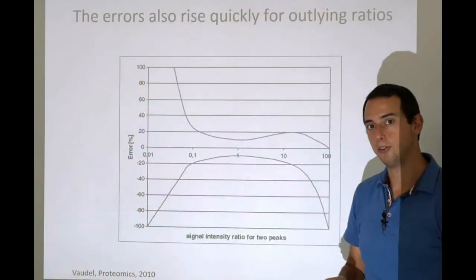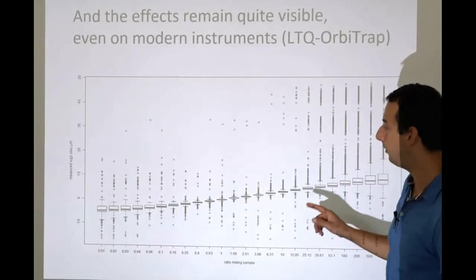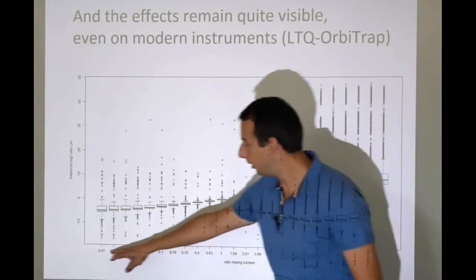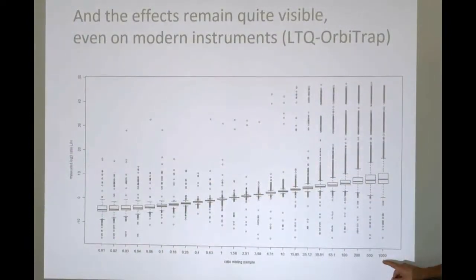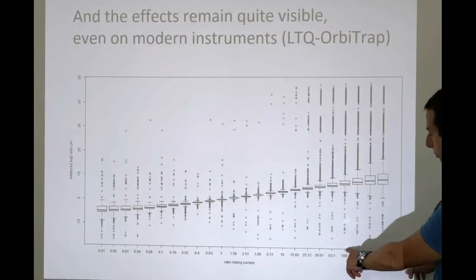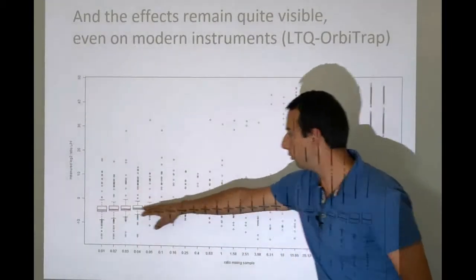You can go one step beyond that. This is work done in Ghent by Anstas and Evie Timmerman, and they actually went from 1 over 100 all the way to 1,000 over 1. So this is new compared to the previous.